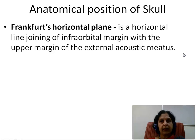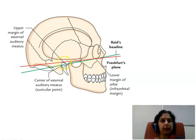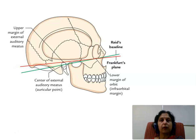Frankfurt's horizontal plane is a horizontal line joining the infraorbital margin with the upper margin of the external acoustic meatus. In the same diagram, the red colored line is the Frankfurt's horizontal plane, which passes from the infraorbital margin anteriorly and goes on to meet the upper margin of the external auditory meatus. We can use either of these lines — the Rietz baseline or the Frankfurt's horizontal plane. Both, when used, should lie in a horizontal plane, and that is what helps us identify the normal anatomical position of the skull bone.